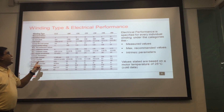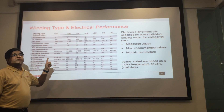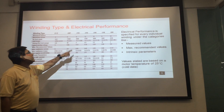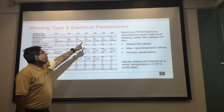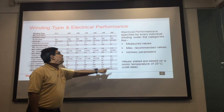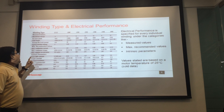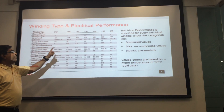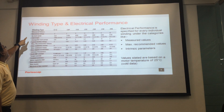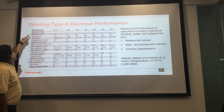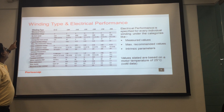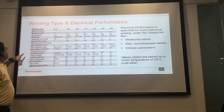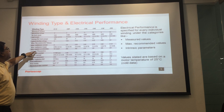Now we come to an important topic of understanding electrical parameters that are specified at different winding sets. There are three data categories in which these performance parameters are specified: number one, measured values; number two, maximum recommended values; and number three, intrinsic parameters.